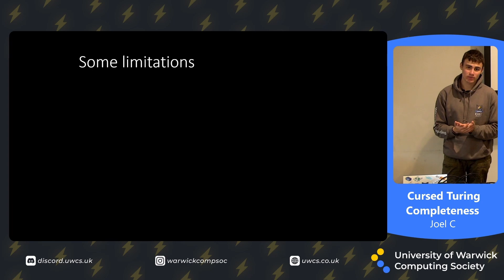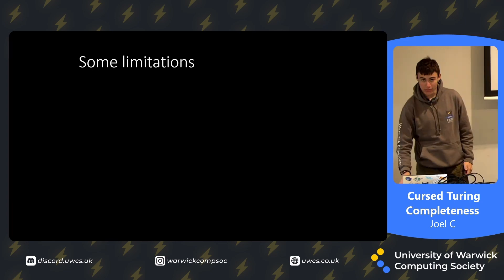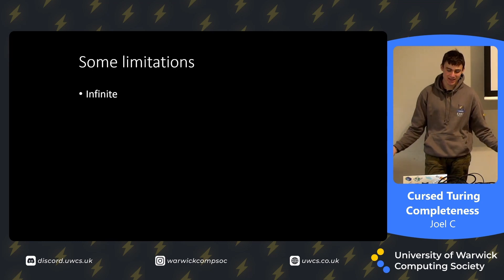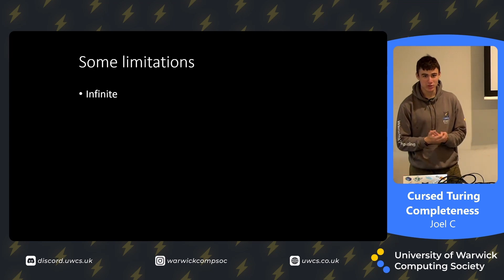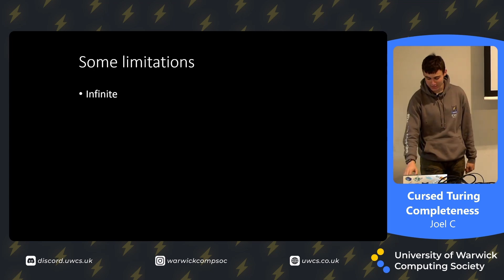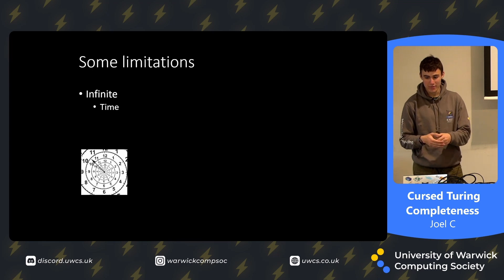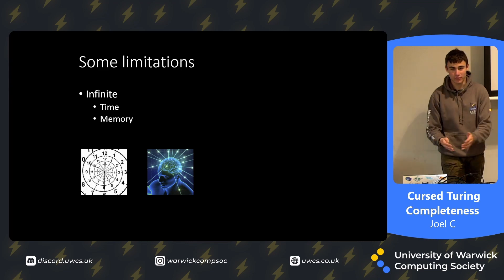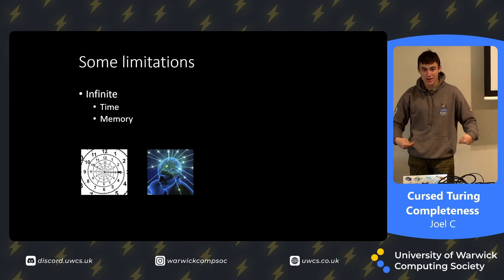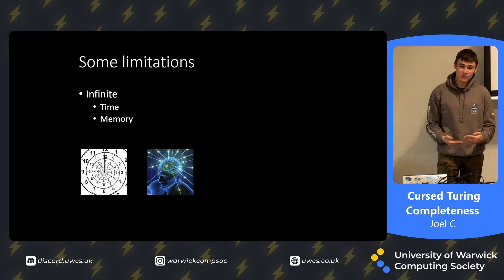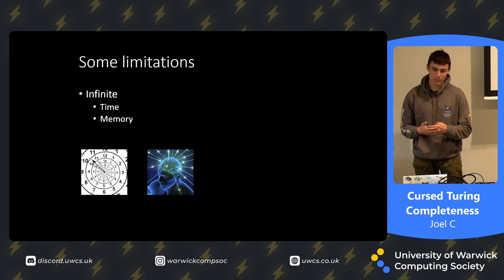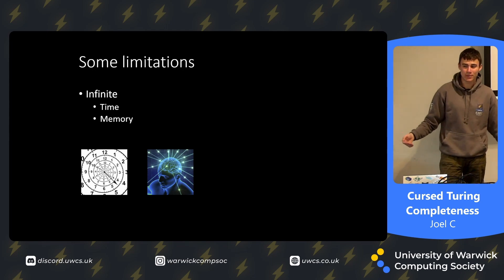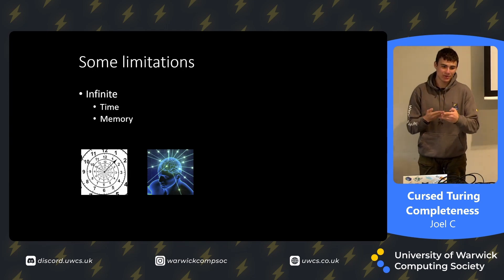However, there are some limitations on what something Turing complete can be in this world. The main thing is infinity. Turing machines are defined theoretically and thus they can compute for as long as they need to and have infinite memory, meaning the program we input can be as large as we want. Obviously we live in a world run by physics, so we define acceptable limitations: if it can theoretically use infinite memory and compute in infinite time, that's good enough.